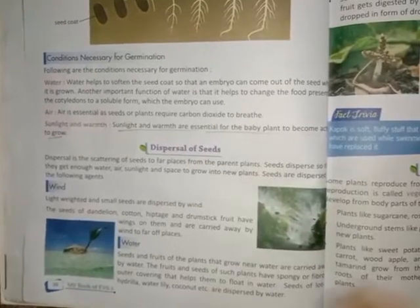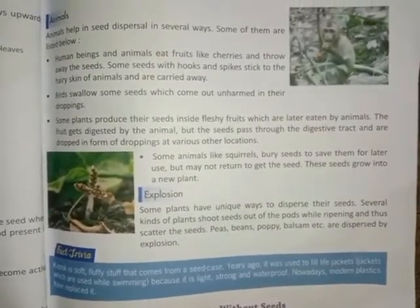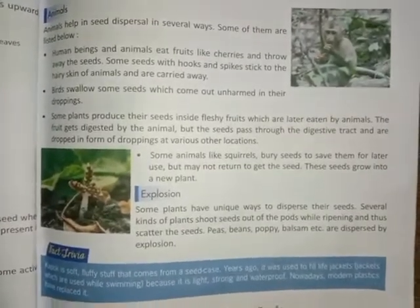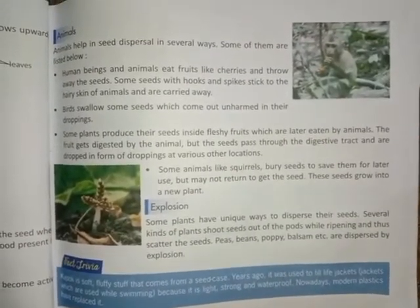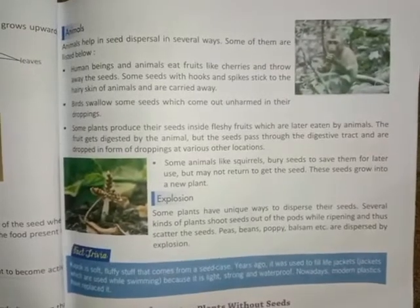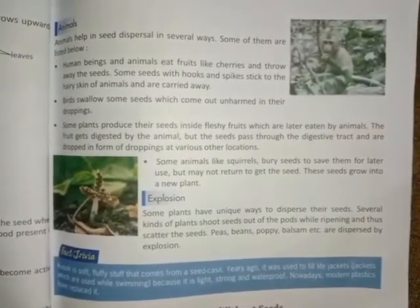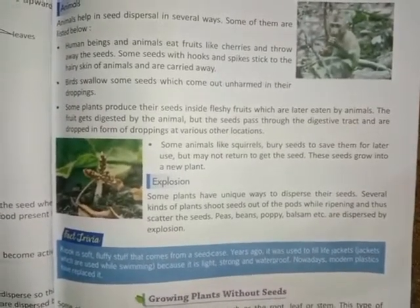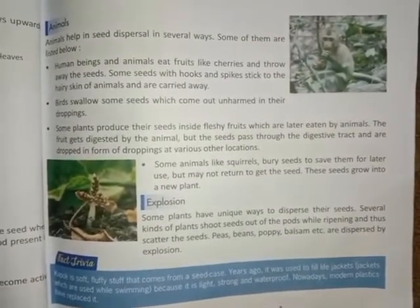Animals: animals help in seed dispersal in several ways. Some examples are: human beings and animals eat fruits like cherries and throw away the seeds. Some seeds which have hooks and spikes stick to the hairy skin of an animal and are carried away. Some seeds come out unharmed in animal droppings. Some plant seeds inside fleshy fruits get digested by animals but the seeds pass through the digestive tract and are dropped in the form of droppings at various other locations.